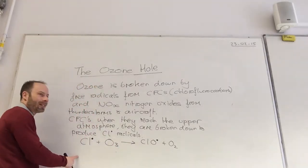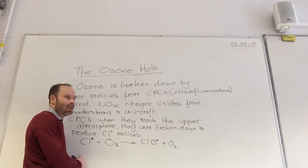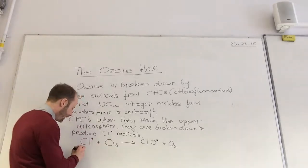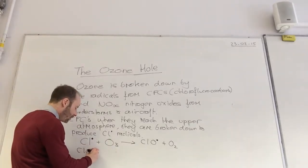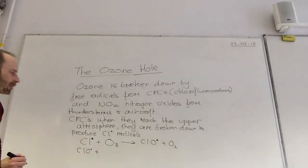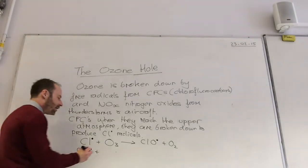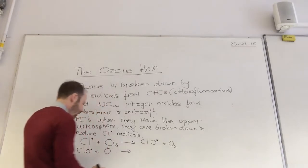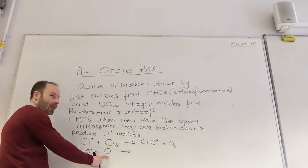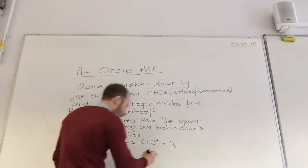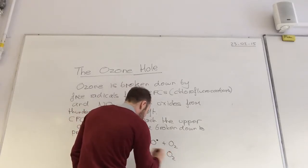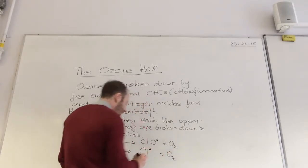So that's step one. To get to step two I have to use this guy. So ClO. He comes along and he meets an oxygen atom. And those two guys go on to give me oxygen gas and I also produce Cl.